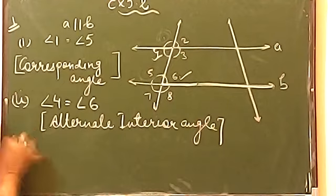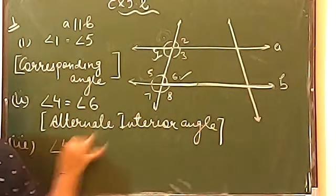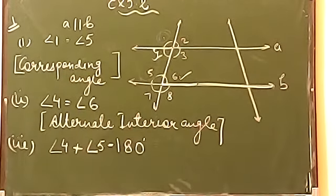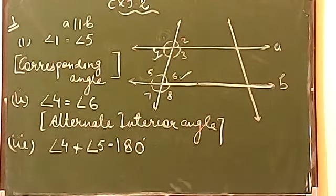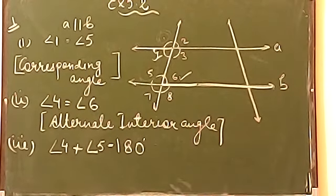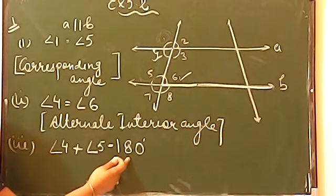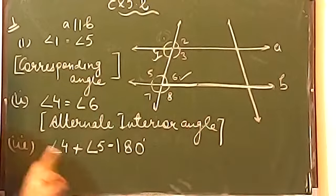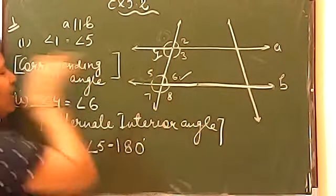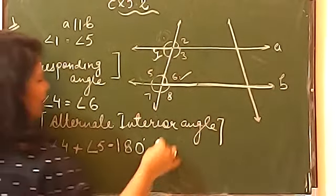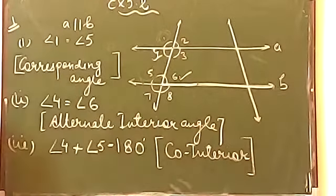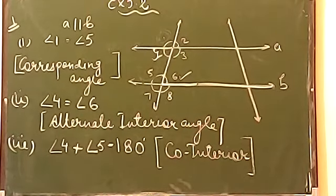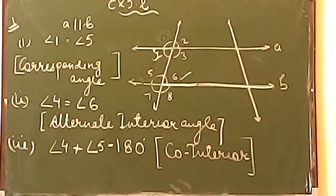The third one is telling you: angle 4, if you add angle 5, you get 180. Why do you get 180? No, they are not linear pair. Which angles are they? Co-interior angles. Remember, 180 does not always mean they are linear pair. They are not in a straight line position and they are not adjacent either. These are co-interior angles. Another name for them is angles on the same side of the transversal. So this is all about question number 1.